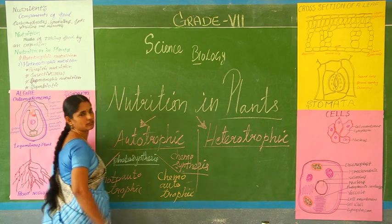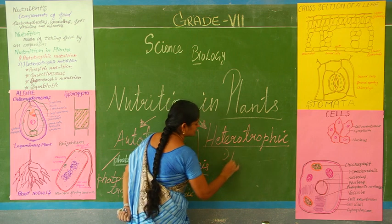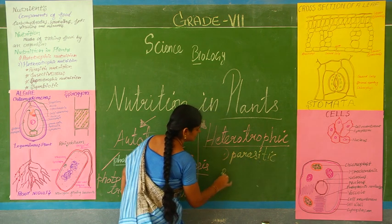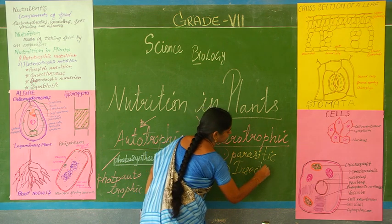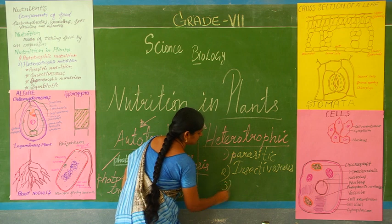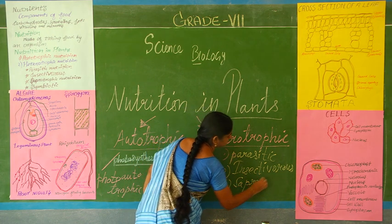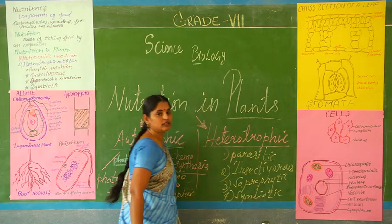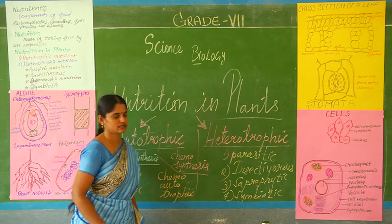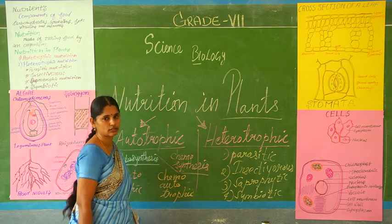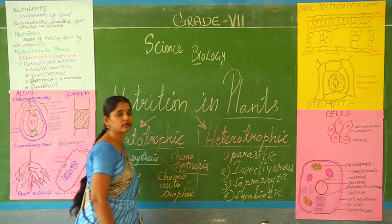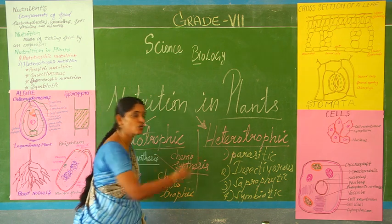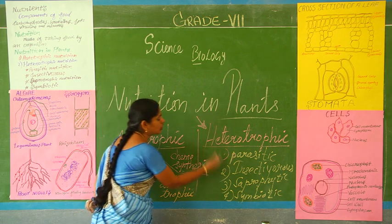In heterotrophic plants, there are parasitic plants, insectivorous plants, and symbiotic plants. Why the plant is not able to prepare its own food, what is not present in them, how they get food from other living things — all of this we will see in our next video class.